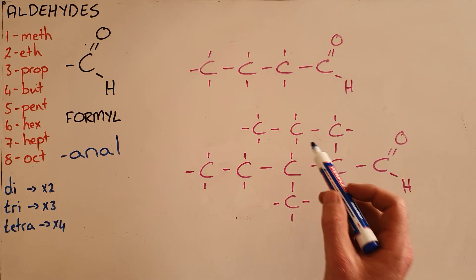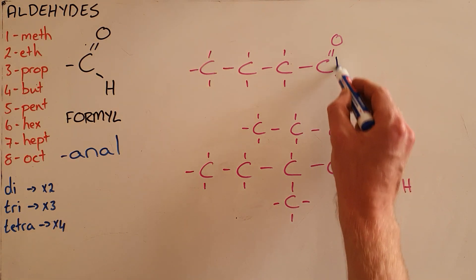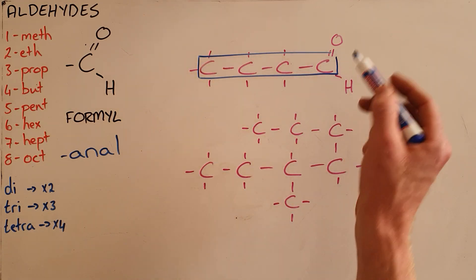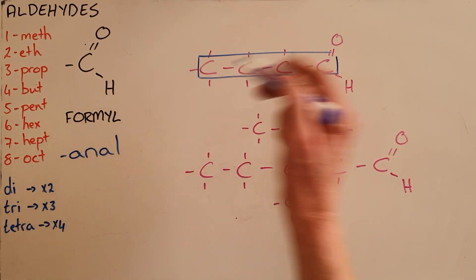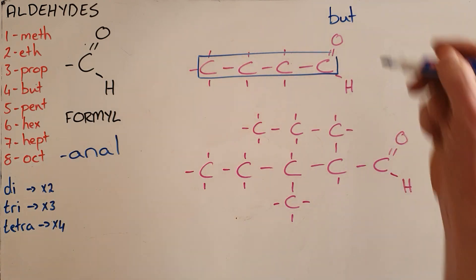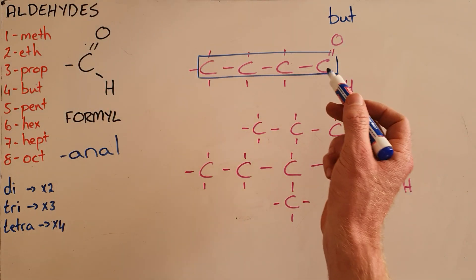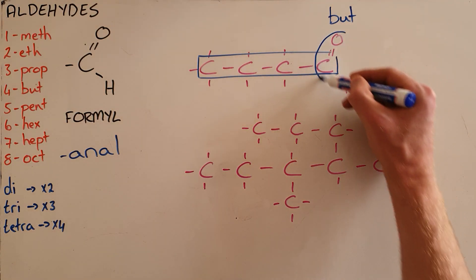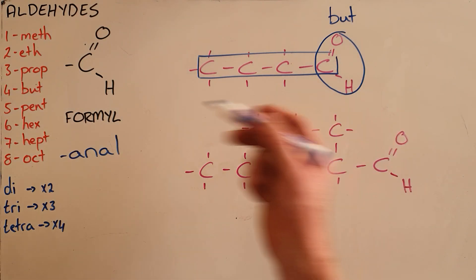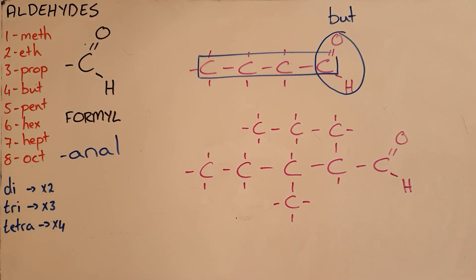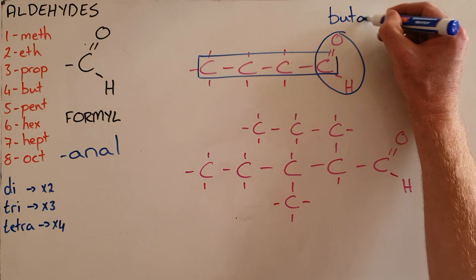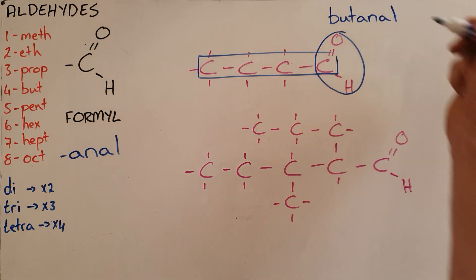We name a compound by counting the number of carbons in the longest chain: meth, eth, prop, but. Since it contains this formyl functional group, it is an aldehyde and therefore gets the suffix 'anal', so we would call this butanal.